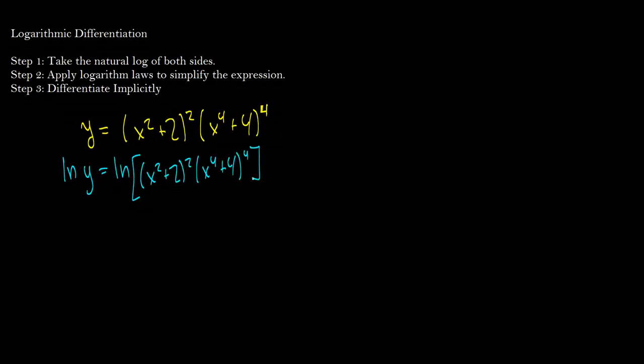Now we're going to apply our logarithm laws to simplify the expression. So ln of y is taken care of. And we know because we are multiplying two things inside of a log, we can split that up and add them. So we have log of x squared plus 2 squared plus natural log of x to the 4th plus 4 all to the 4th.